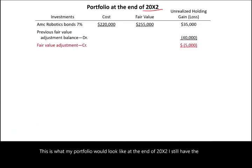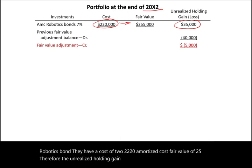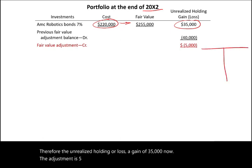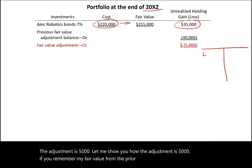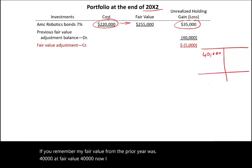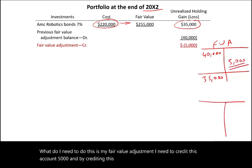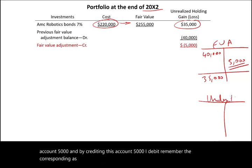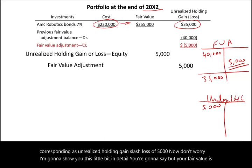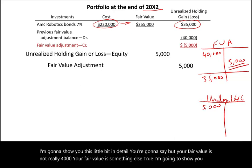After the sale, at year end 20X2, I still have the AMC Robotics bond with amortized cost of $220,000 and fair value giving an unrealized holding gain of $35,000. My prior fair value adjustment was $40,000; after removing $25,000 it's $15,000. I need a balance of $35,000, so I debit fair value adjustment $20,000 and credit unrealized holding gain/loss $20,000. The net adjustment reported in comprehensive income is a loss of $5,000, bringing comprehensive income to $515,000 from net income of $520,000.